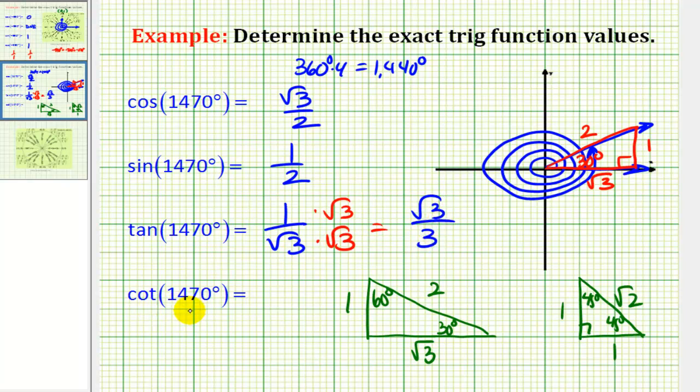And then cotangent theta would be the reciprocal of tangent theta. Well, the reciprocal of 1 over square root of 3 would just be square root of 3 over 1, or just square root of 3.